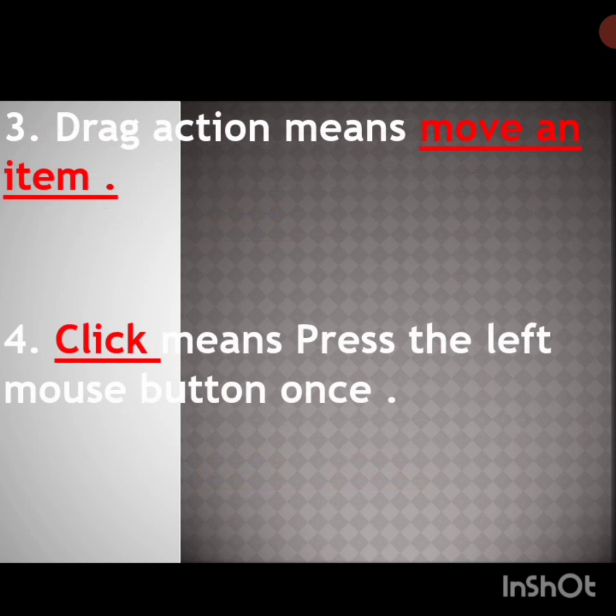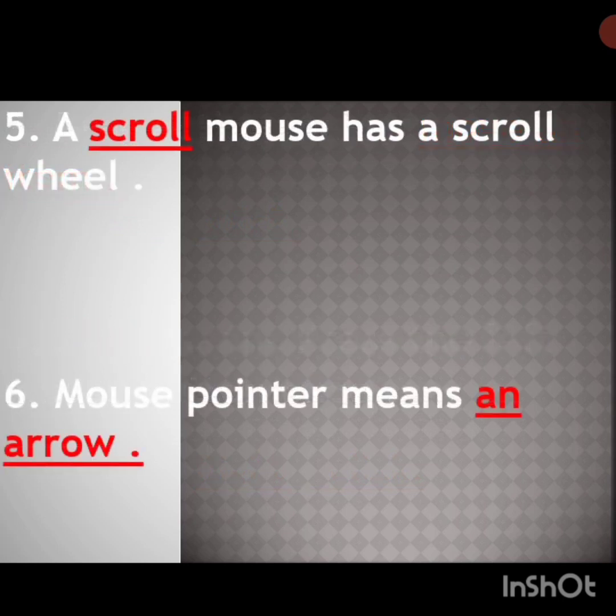Drag means move an item. Next, fourth one: dash means press the left mouse button once. Click means press the left mouse button once. Next, fifth one: a scroll mouse has a scroll wheel.